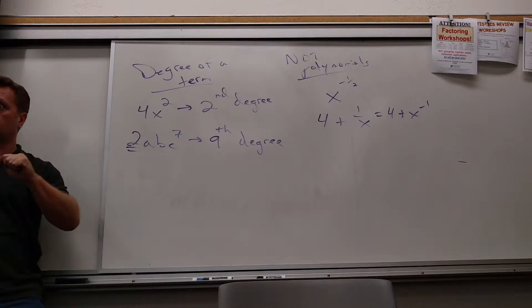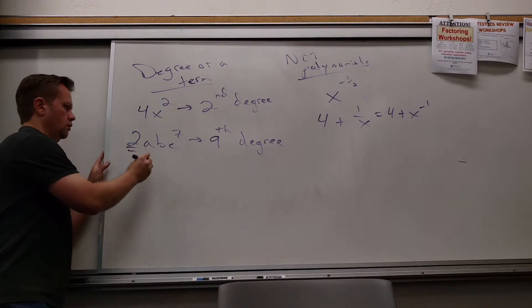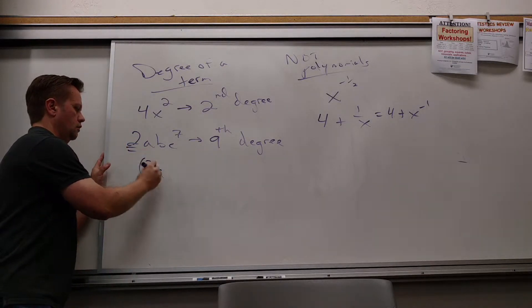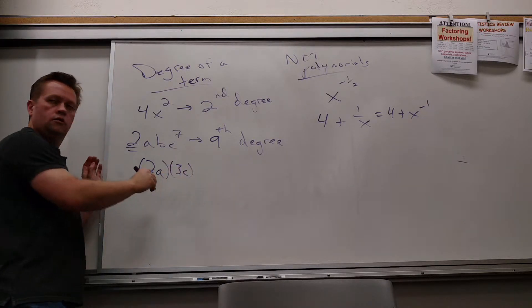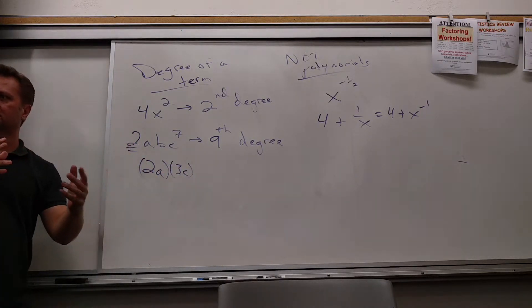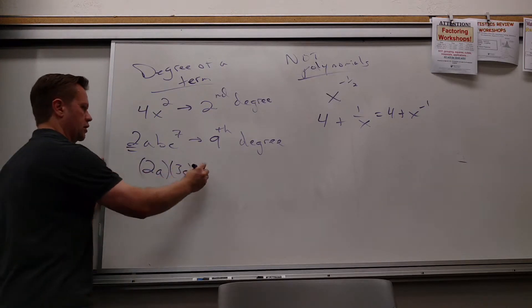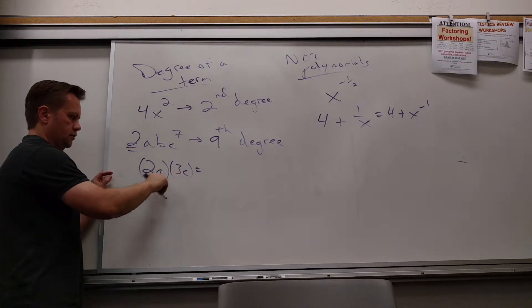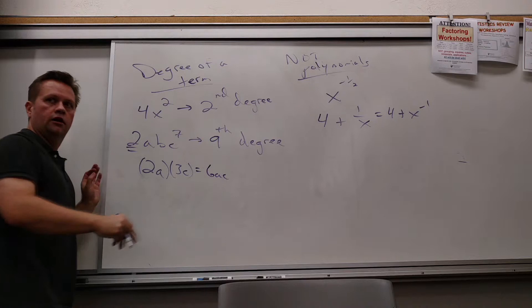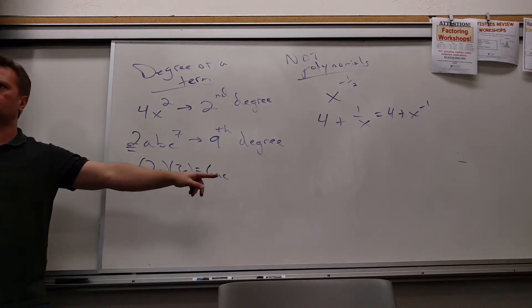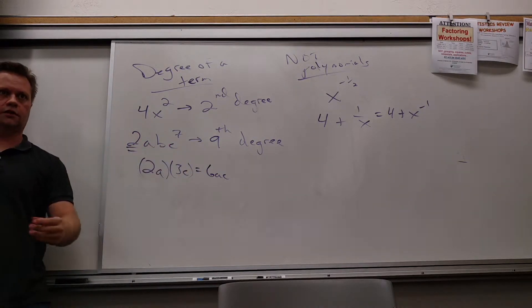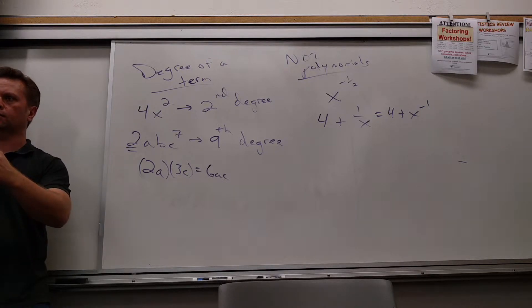So if you have like two a, three c, how many? Like that? Well, then I have a little bit of work to do first. What is the monomial I'm talking about then? Six. Six a, c. And then what is the monomial's degree? Second degree. Because I see an a and a c, so there's two variables. So second degree.